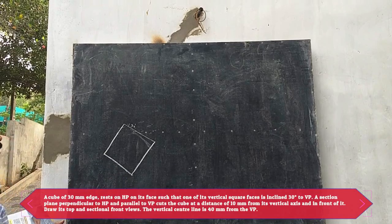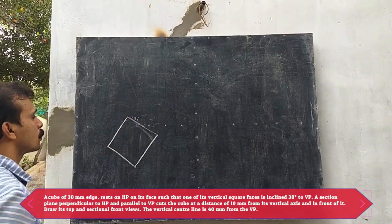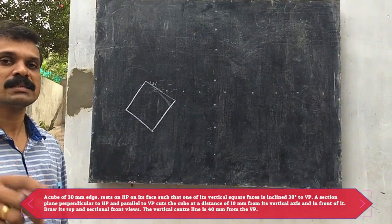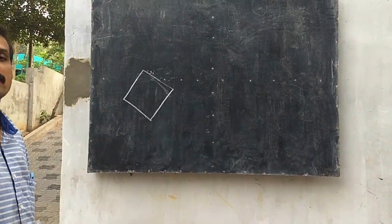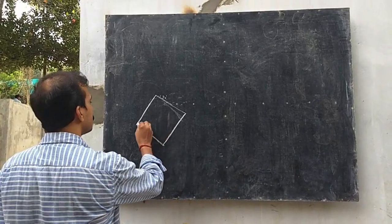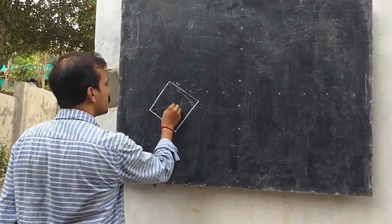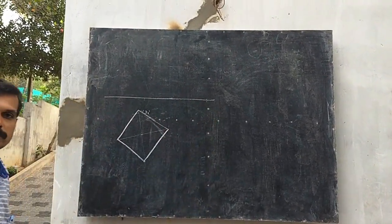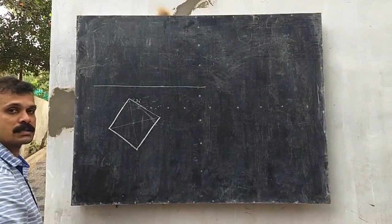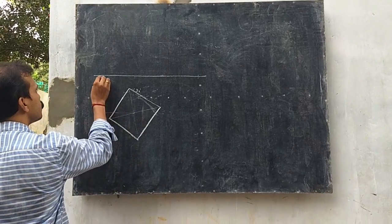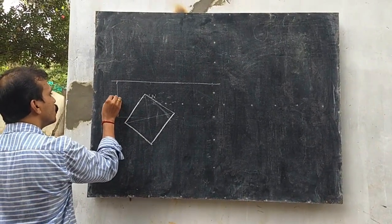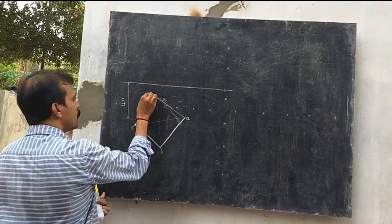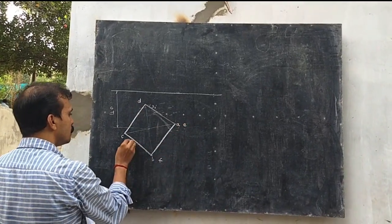Now the top view of the cube is constructed, because in the top view we are getting the base of the cube. It is given that the center is at a distance of 40mm. The easiest method is to obtain its center, and from that point at a distance of 40mm draw the XY line. First construct the cube, locate its center, and from the center at a distance of 40mm draw the XY line. Name the points A, B, C, D, E, F, G.